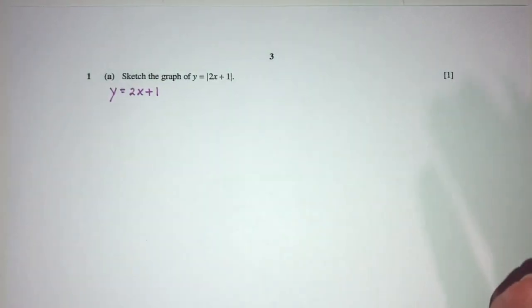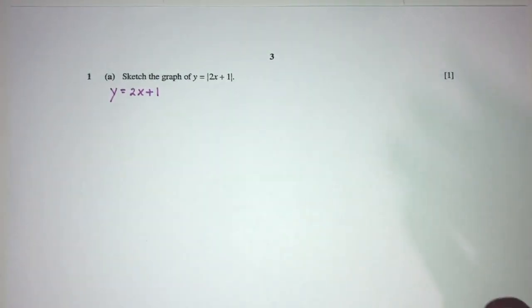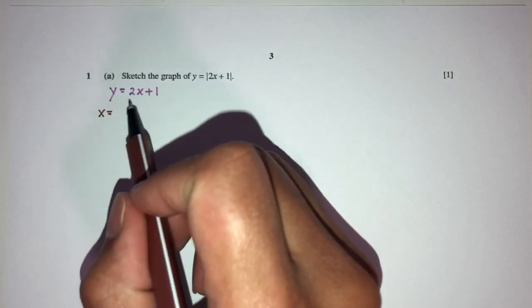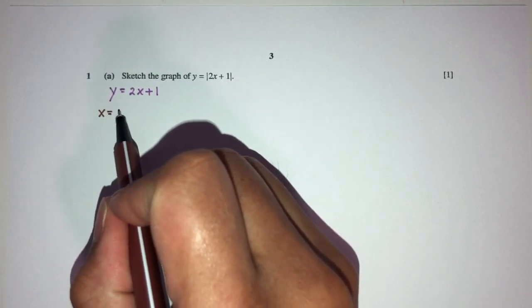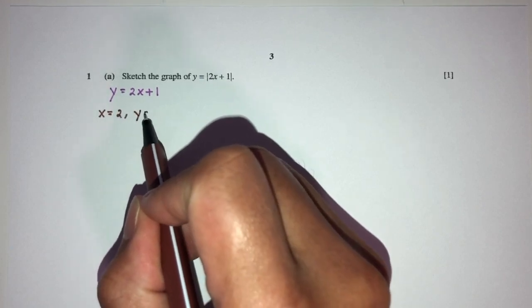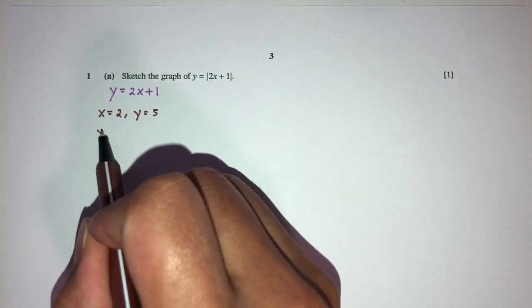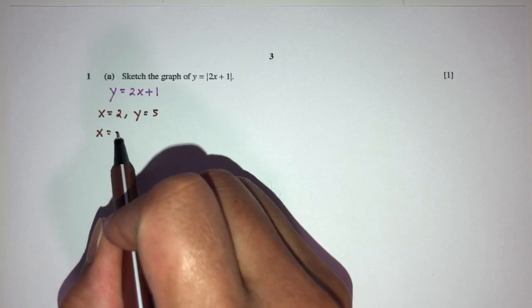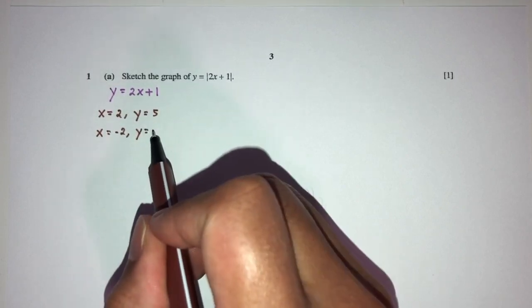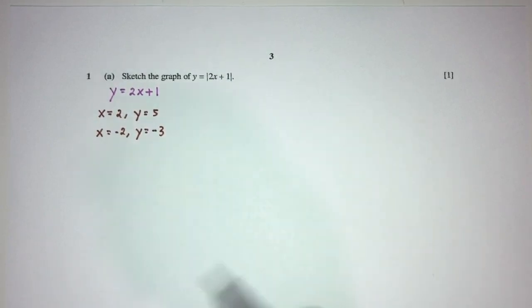I can try to find some values or find two points to sketch a line. Let's say x equals 2, then y will be the value of 5. And x equals minus 2, y will be the value of minus 3. There you go, so we have two passing points. We can sketch the line pretty easily.